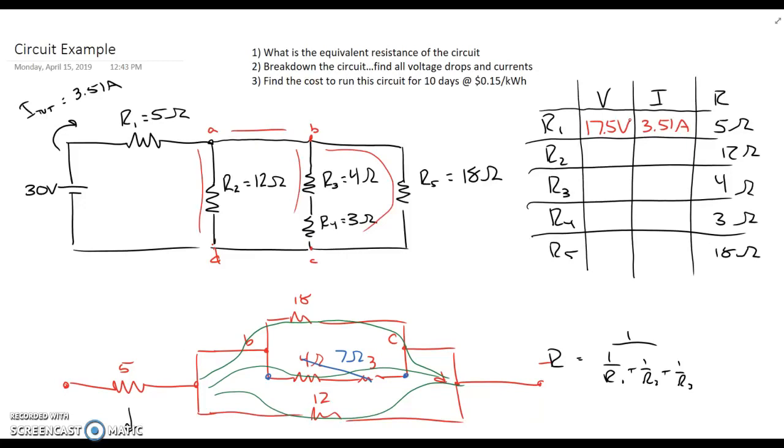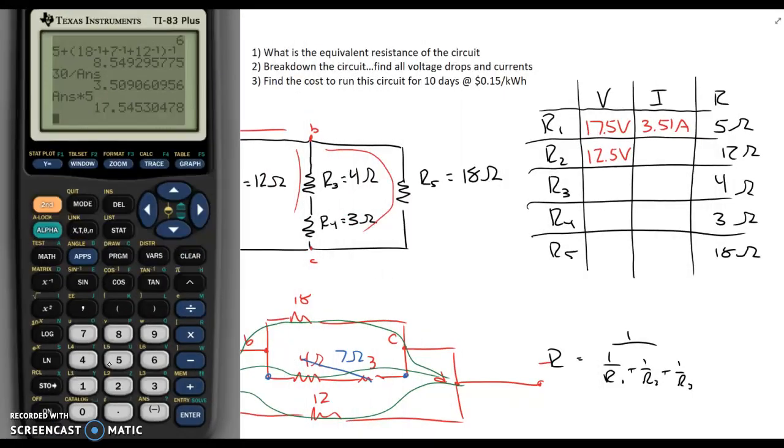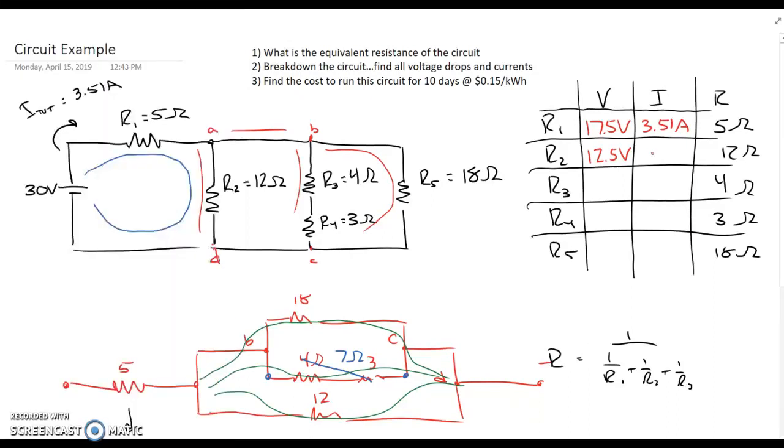Now we need to go into our loop rule for voltage. Every pathway back to the source drops all the volts. So one pathway goes through the 5, the 12, and back to the source. That loop has to drop 30 total volts. And we've already dropped 17.5 across the 5 ohm, which means across the 12 ohm resistor would be 30 minus 17.5, which should be 12.5 volts. And using Ohm's law, I can take that 12.5 divided by the resistance of 12, and the current of 1.04 amps goes across that R2.